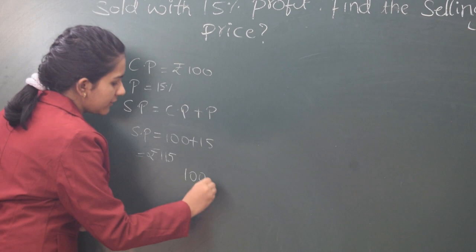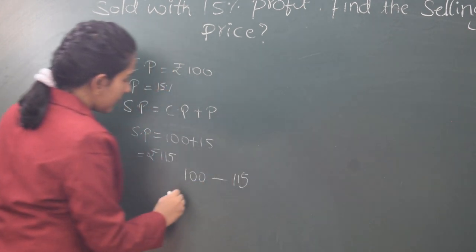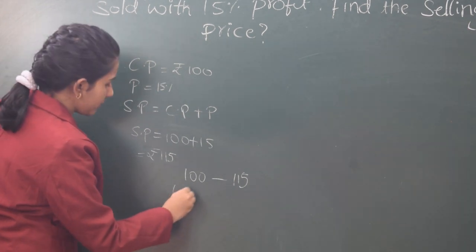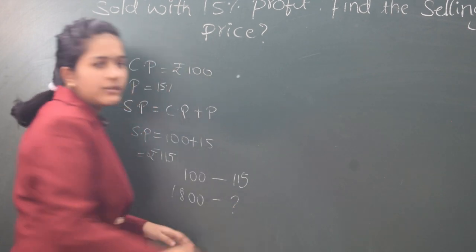For Rs. 100, if the selling price is 115, then for the original cost price, that is Rs. 1800, what will be the selling price? This is what we should find.